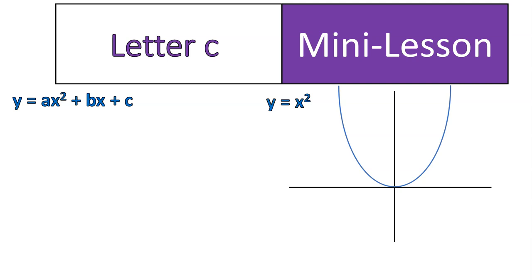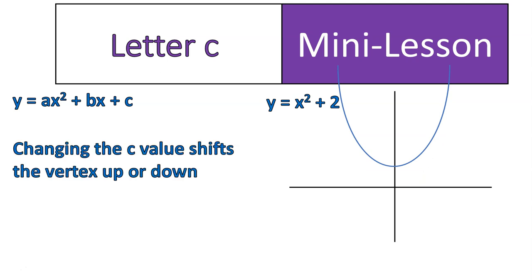We're going to end off on something that's a lot easier, and that's our letter C. Letter C works to just shift the graph up if it's a positive number or down if it's a negative number. That's it.